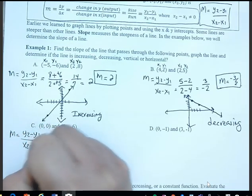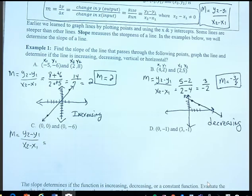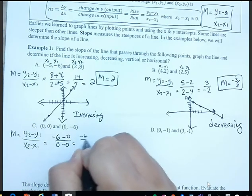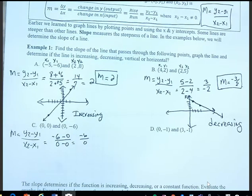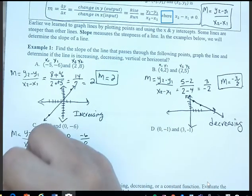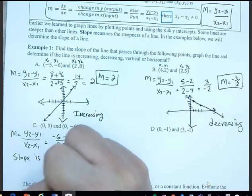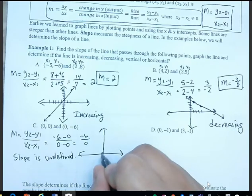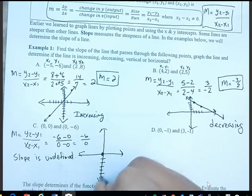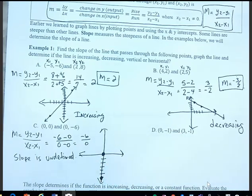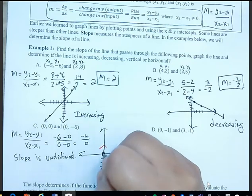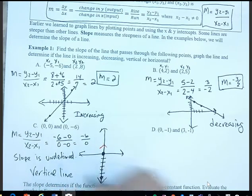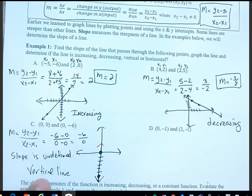For part c, y₂ is negative 6 minus 0, divided by 0 minus 0. We end up with negative 6 divided by 0. We cannot divide by 0, so we say the slope is undefined. If we graph the points (0, 0) and (0, negative 6), the line is right on top of the y-axis. So this is a vertical line, and the slope is undefined.